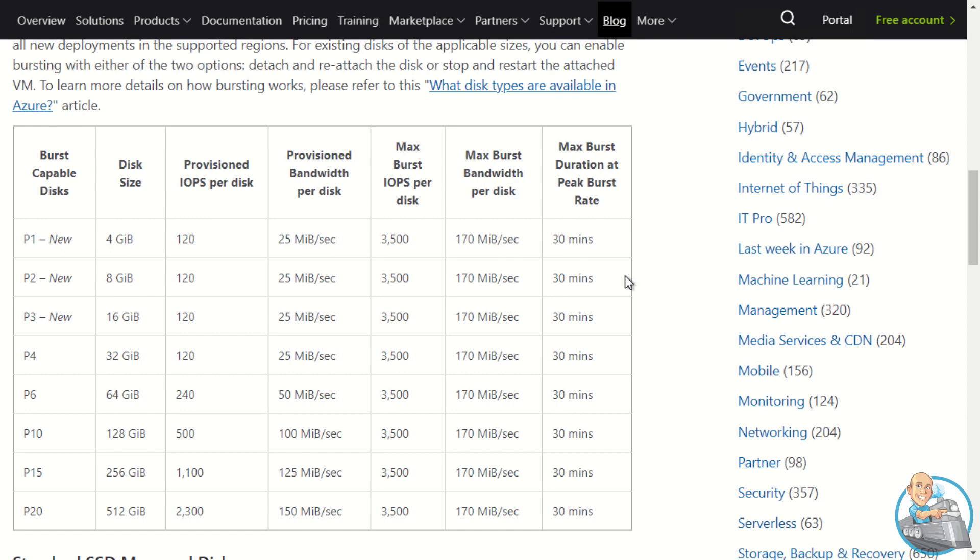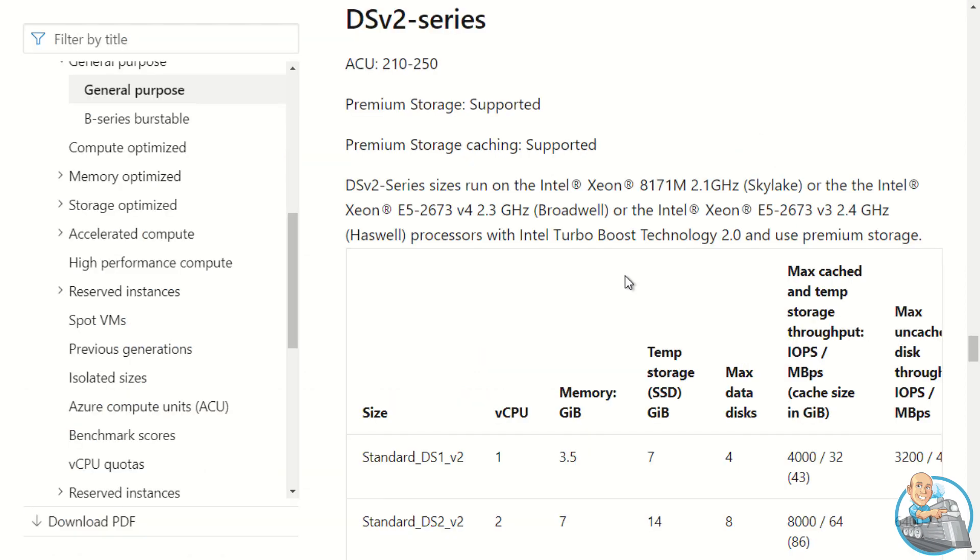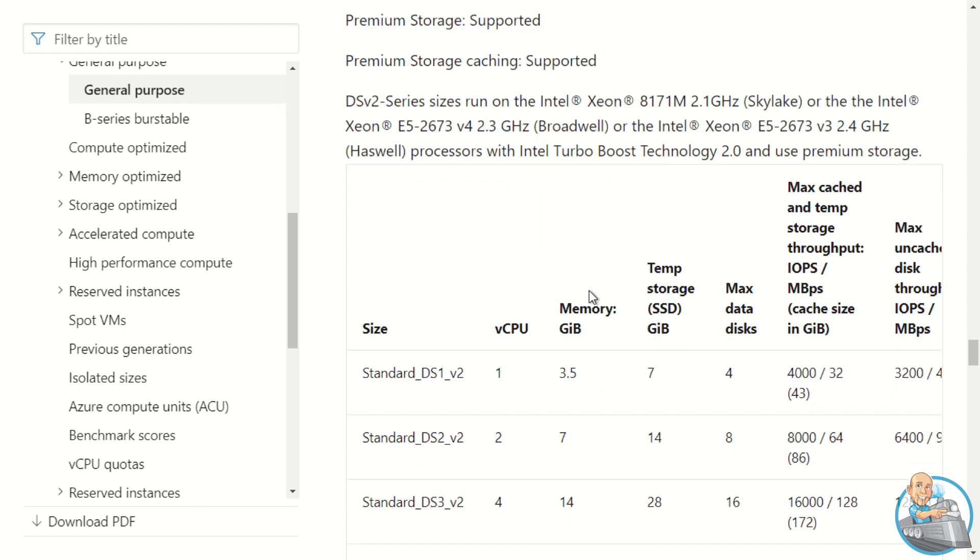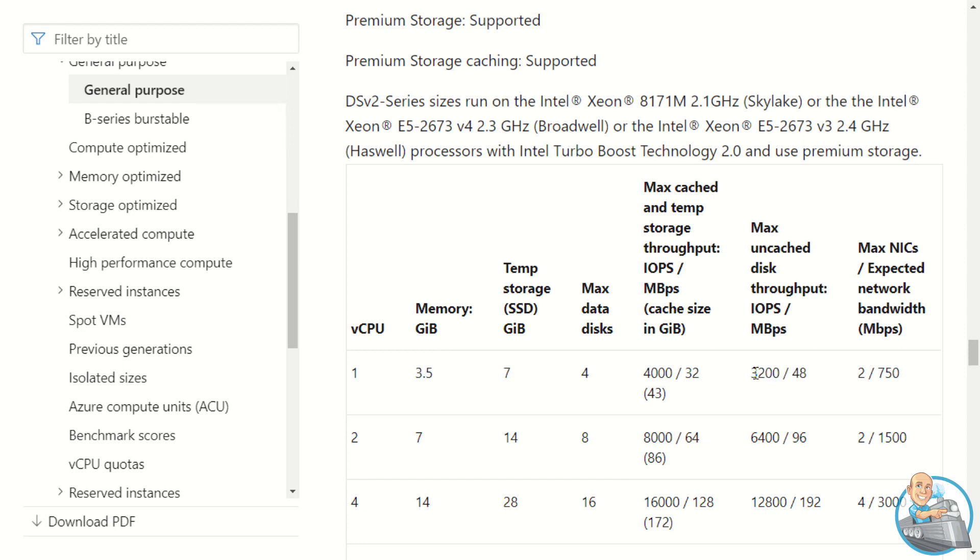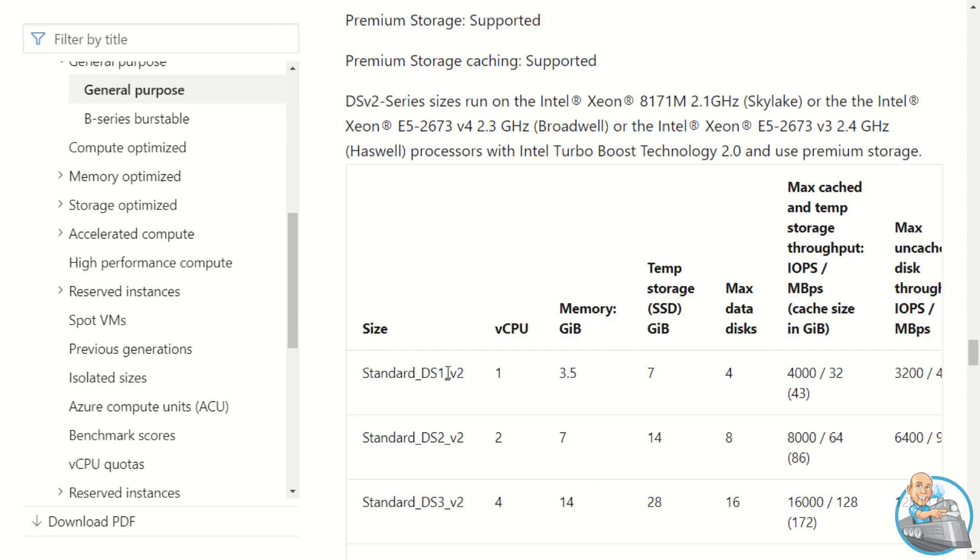So that's the disk, that's their limits. The virtual machines also have their own limits. So here my DS1 supports four data disks. And then if I actually look at its performance, well it can do 3200 IOPS and 48 megabytes per second. So that 3200 is below the 3500 burst I could do with the disk, which is why my West Central US VM, I increased to a D2. Because that can support 6400 IOPS. It can also support eight data disks instead of four and a higher throughput. So you can see the limits of the VM really do scale along with the CPU, the memory and everything else.